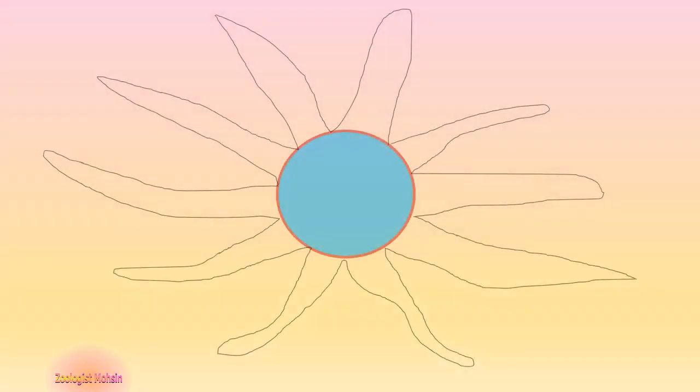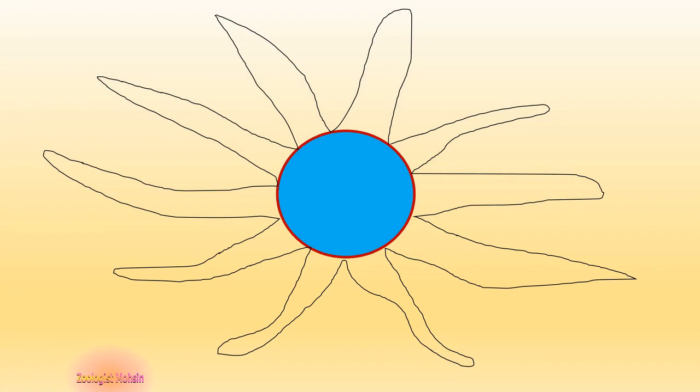Here is the schematic diagram of a contractile vacuole. Vacuoles are present in the cytoplasm and all its arms are surrounded by cytoplasmic fluids.